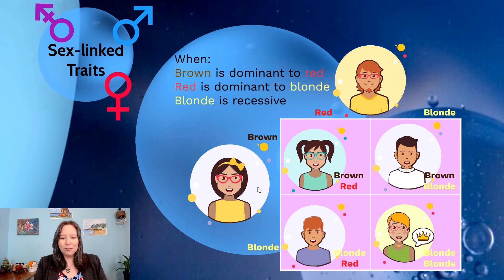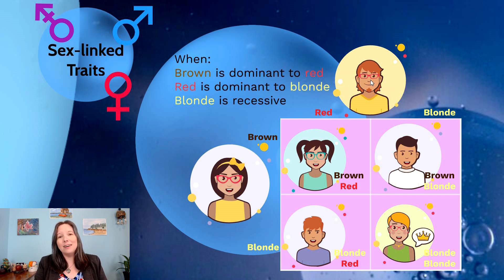Notice that although she's carrying one allele for blonde hair, it doesn't manifest in her phenotype. Same with the other parent — although he's carrying one allele for blonde hair, it also isn't manifested in his phenotype due to dominance.